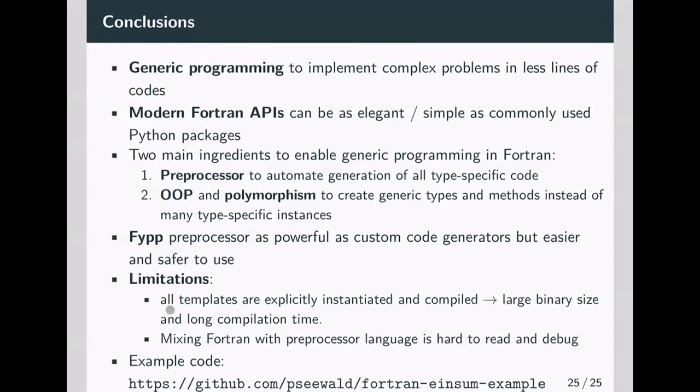I introduced the FYPP preprocessor and just last but not least, I want to mention some limitations. If you use an external preprocessor, all the templates and combinations of templates have to be explicitly instantiated and compiled, which leads to large binary size and possibly long compilation times. The full example code you can find on GitHub. I'm ready to take some questions, but probably we don't have too much time. I will also answer all questions on Slack.